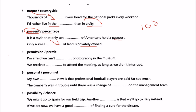Permission and permit have the same meaning but work differently. I am afraid we can't permit photography in the museum — you can't say 'permission' there. We receive permission to attend the meeting. Permission is given with something, and when you permit something, you are giving permission.